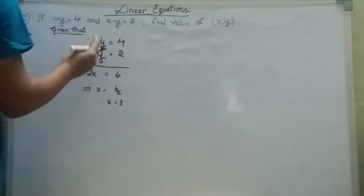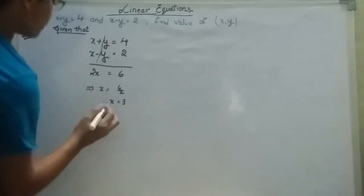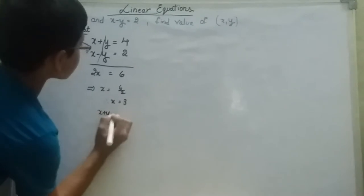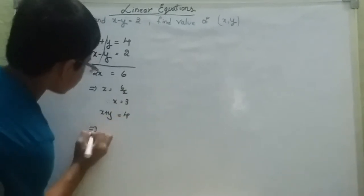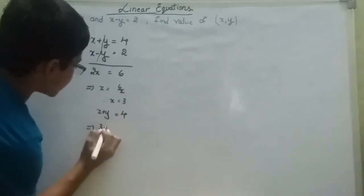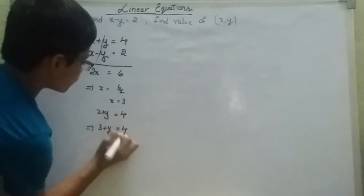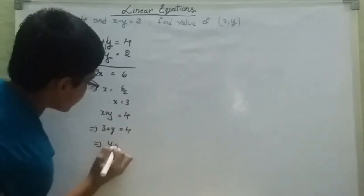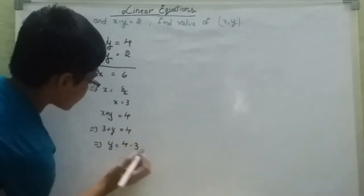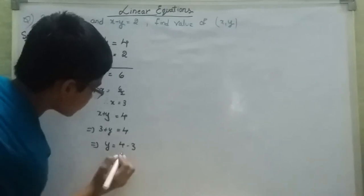Substitute this value in any of the equations. X plus Y is equal to 4. Since X is 3, we have 3 plus Y is equal to 4. That implies Y is equal to 4 minus 3. Therefore, Y is equal to 1.